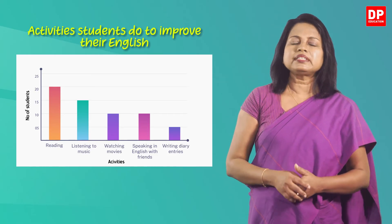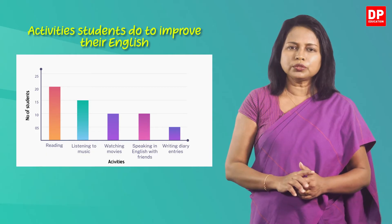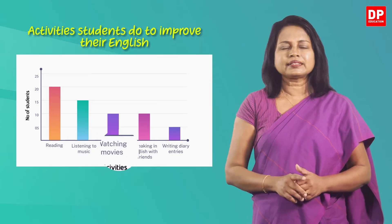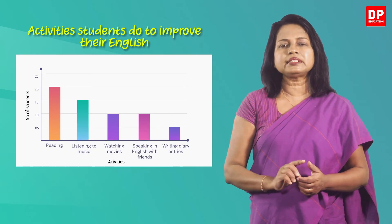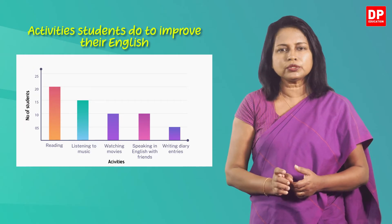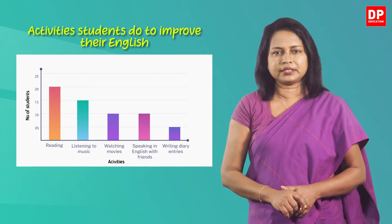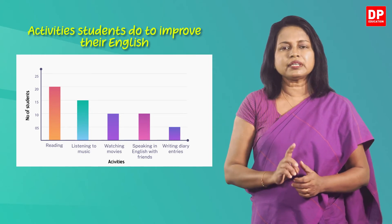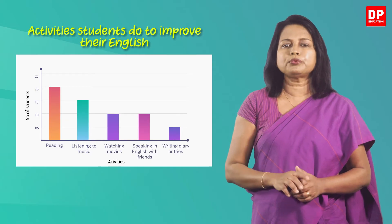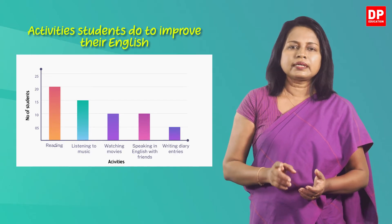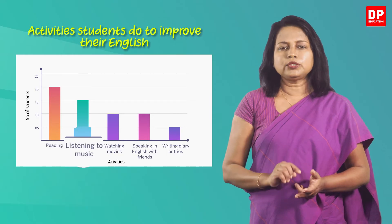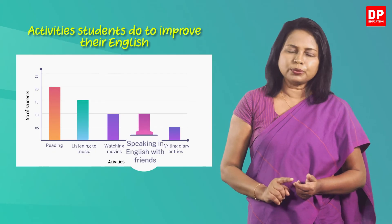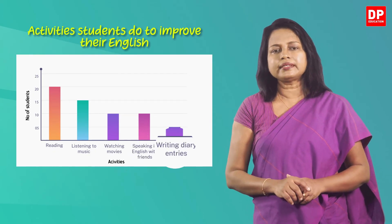This bar chart depicts the activities students do to improve their English. In the chart, the horizontal axis represents the activities while the vertical axis represents the number of students who engage in these activities. According to the bar chart, there are 5 activities that students do to improve their English. They are reading, listening to music, watching movies, speaking in English with their friends, and writing diary entries.